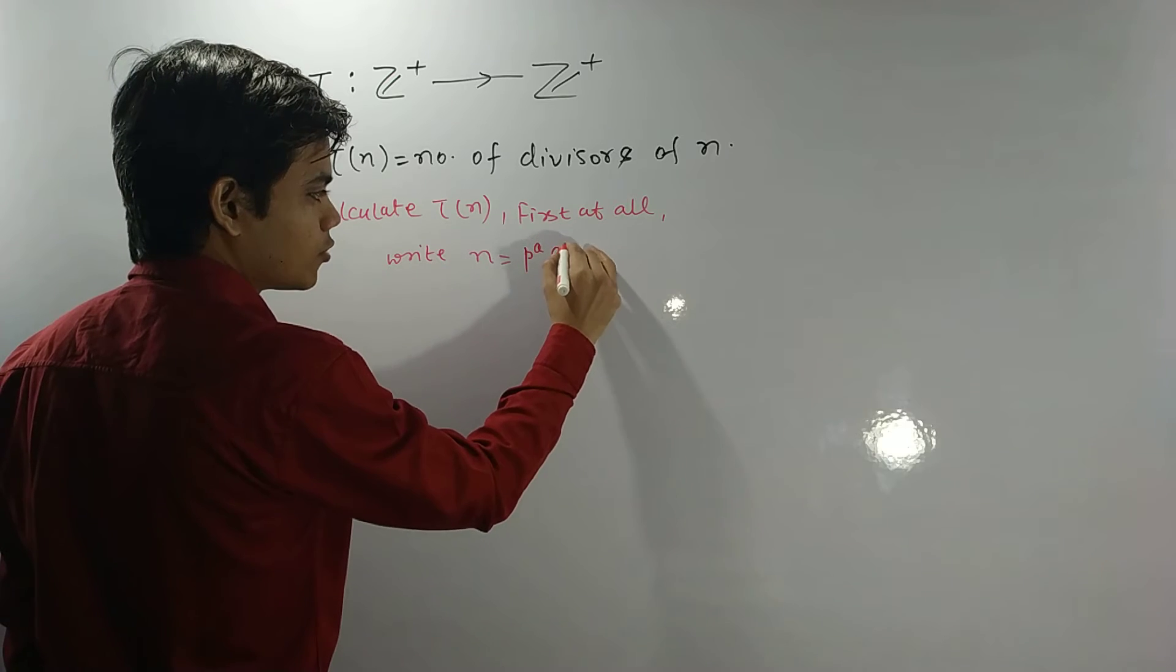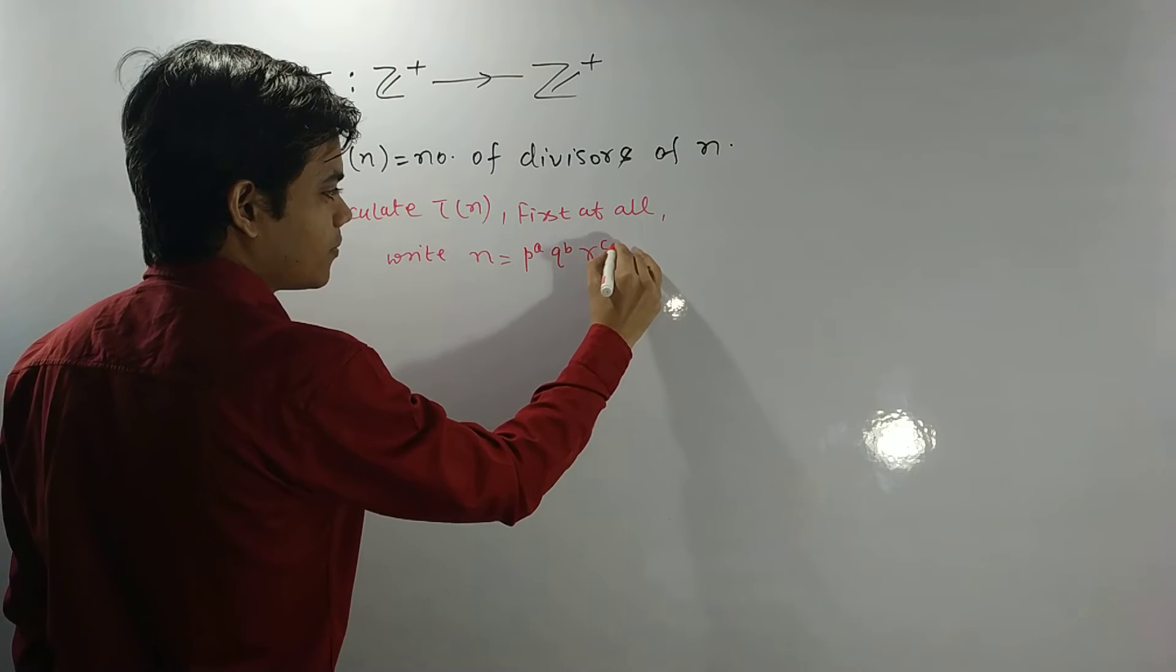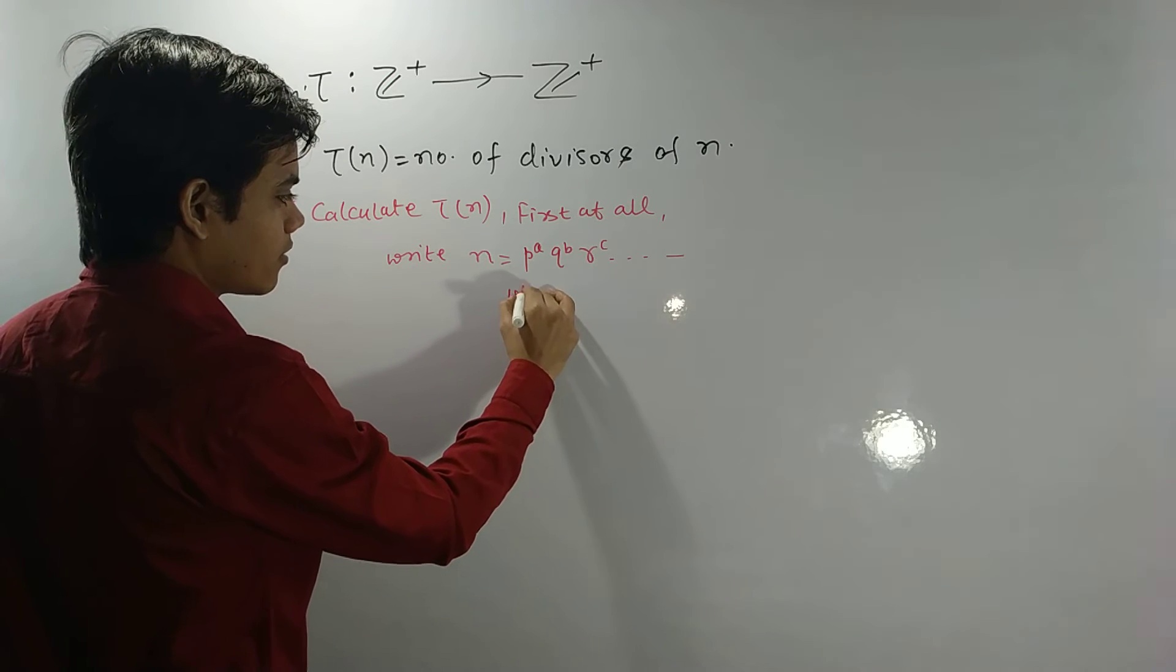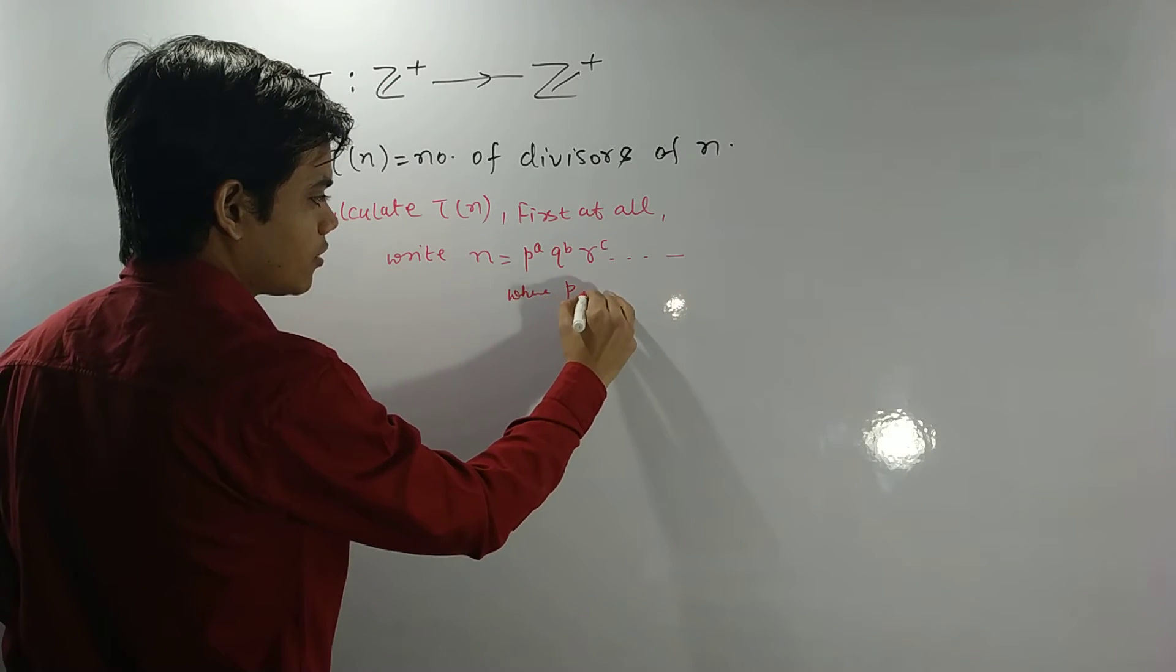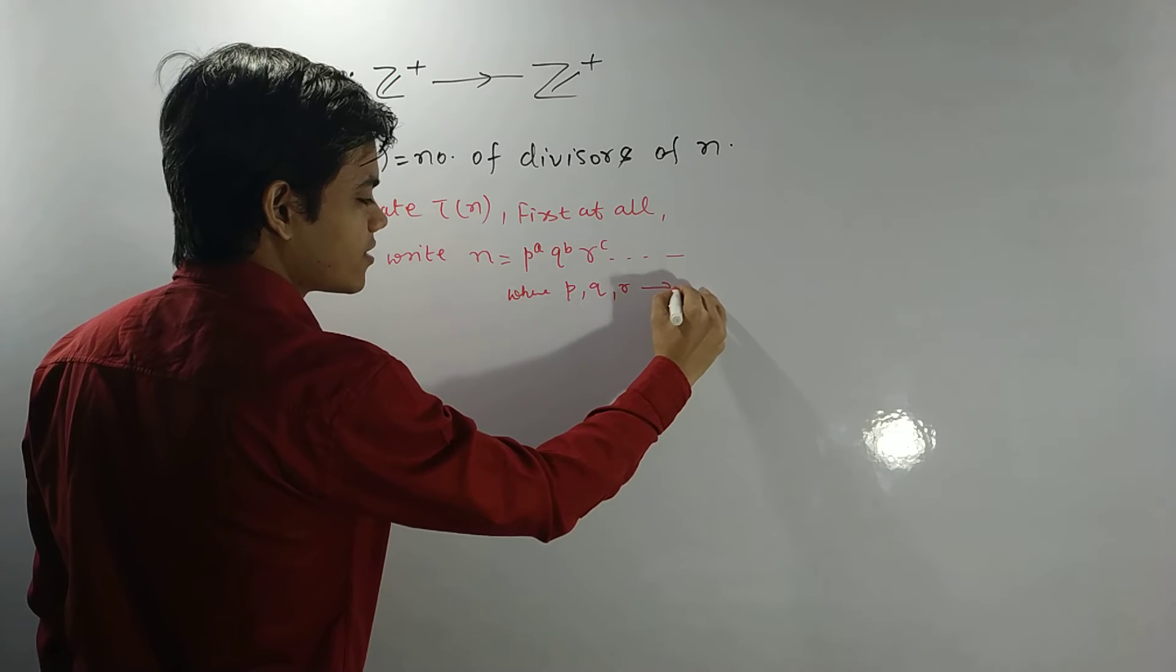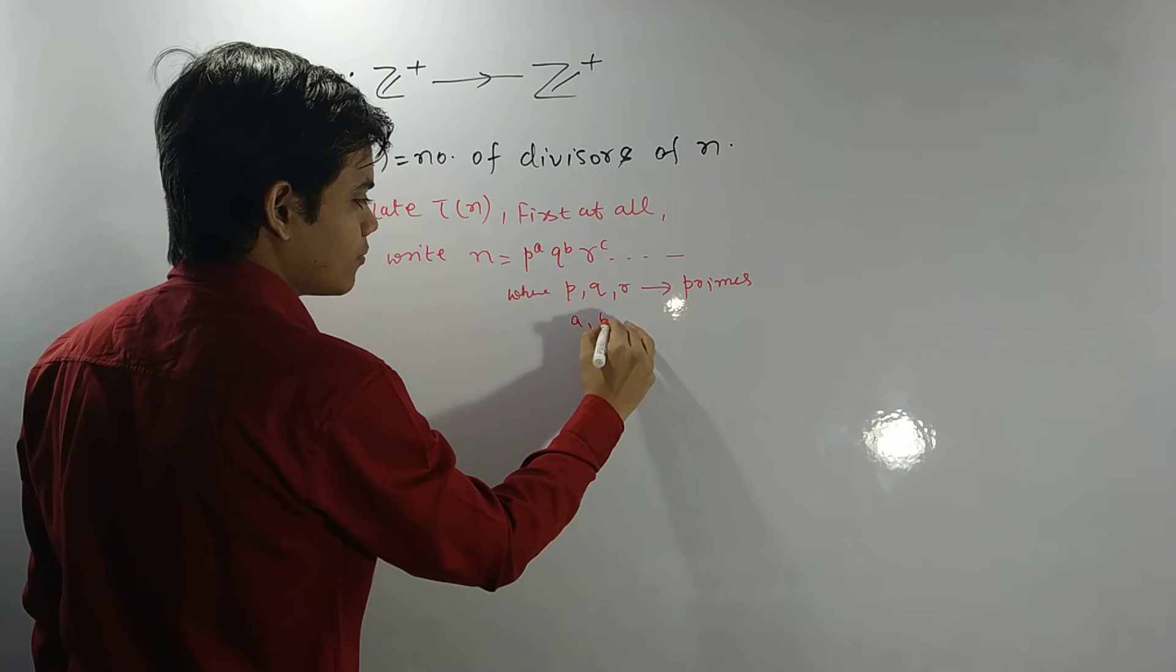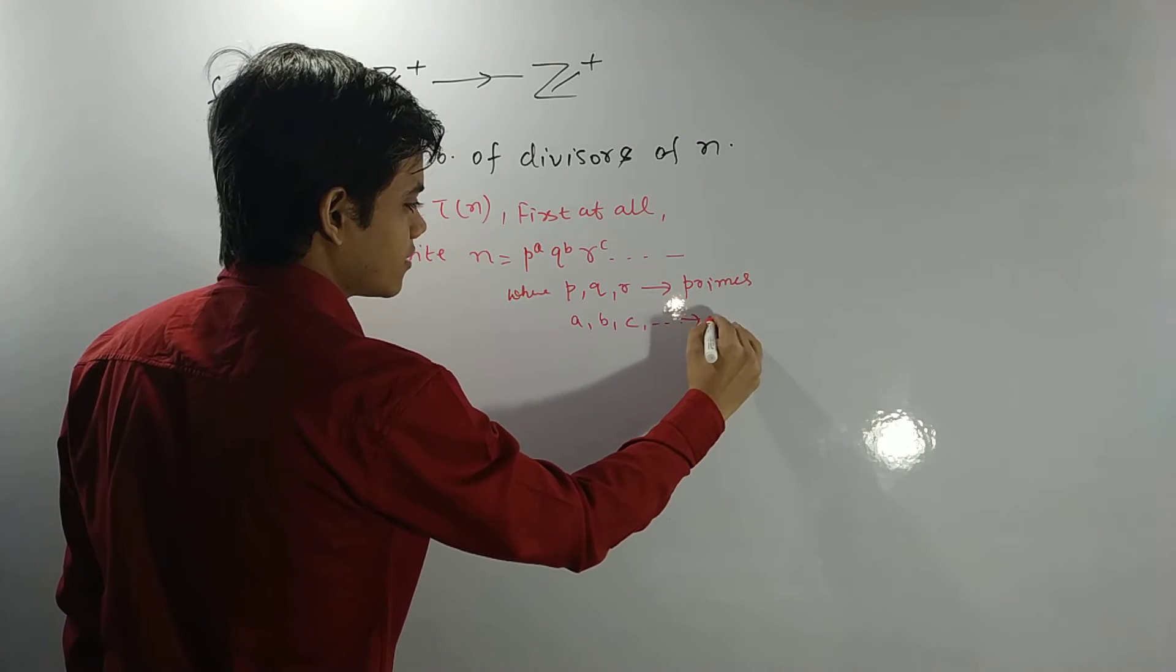Alright, where p, q, r, all these things are primes. But this a, b, c, and all these things are natural numbers. Okay.